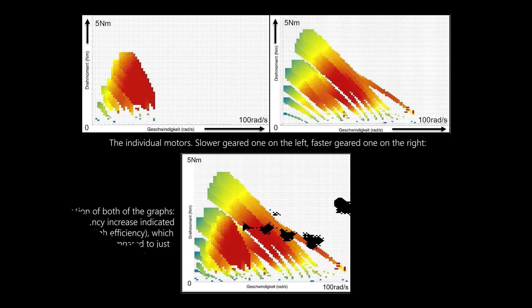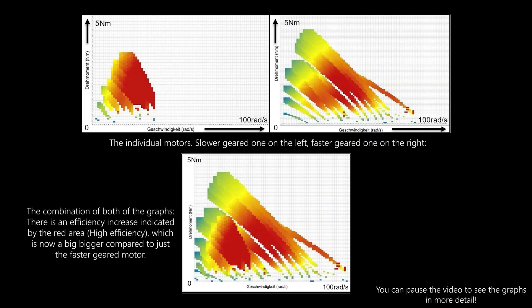You can see how the addition of the second motor with a different gear ratio can improve the maximum torque and also efficiency at lower speeds.